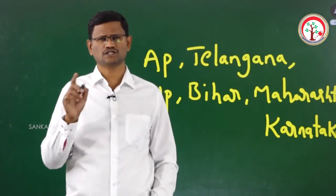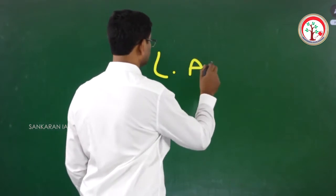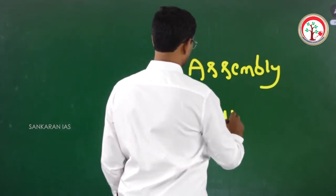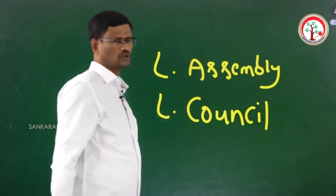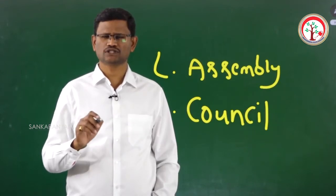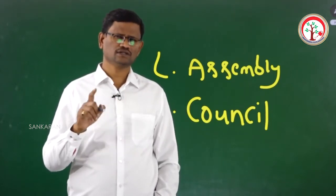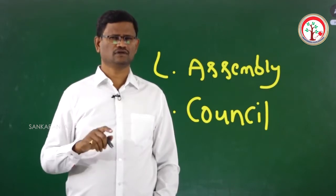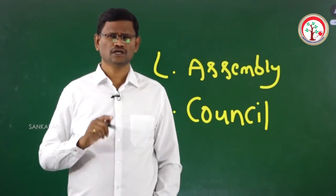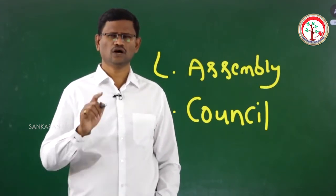In these six states, the upper house is called the legislative council and the lower house is called the legislative assembly. With respect to an ordinary bill, if there is a disagreement between the legislative assembly and the legislative council, remember — in the Indian constitution, there is no provision for joint sitting in case of deadlock between the legislative assembly and the legislative council. So how are matters resolved?